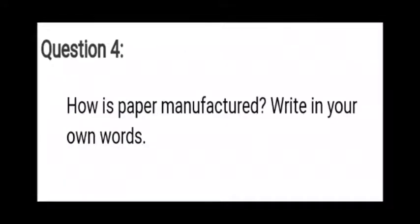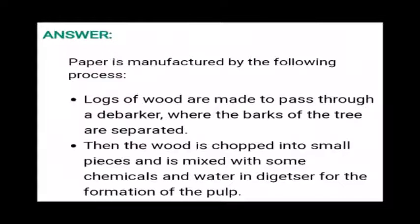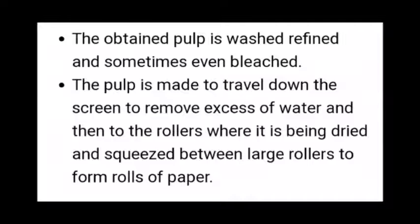Question number four: How is paper manufactured? Logs of wood are passed through a debarker where the barks of the tree are separated. Then the wood is chopped into small pieces and mixed with chemicals and water in a digester for the formation of pulp. The obtained pulp is washed, refined, and sometimes bleached. The pulp travels down a screen to remove excess water, then goes to rollers where it is dried and squeezed to form rolls of paper.